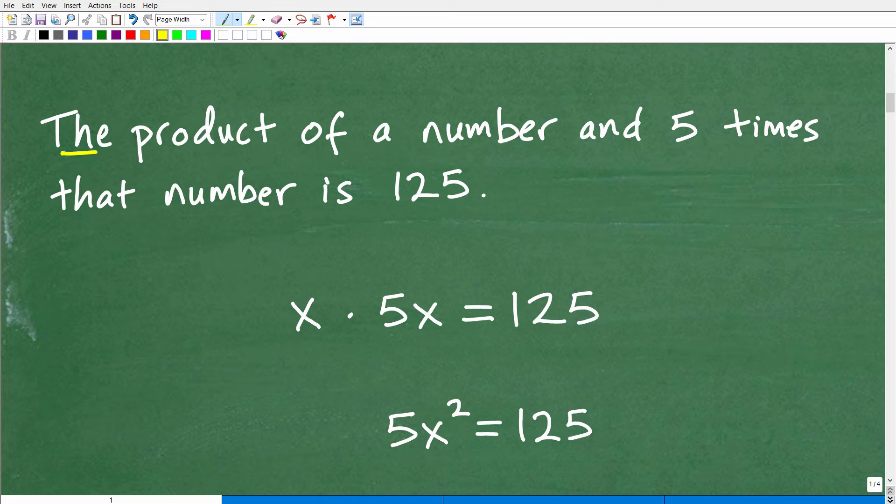So we have the product. Well, what does that mean, the product? Well, the product is the result of multiplication. So the product of three and two is six. So the product is multiplying. So we need to just think of that. Oh, we're going to be multiplying something.